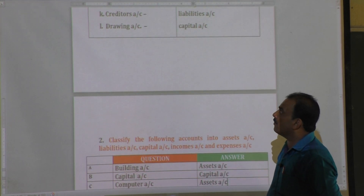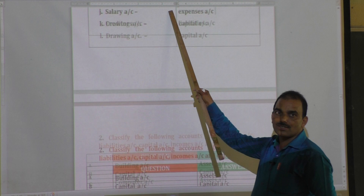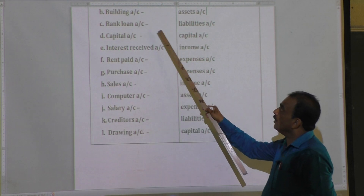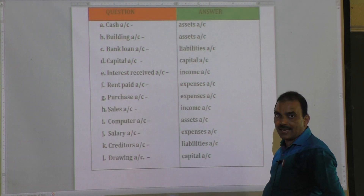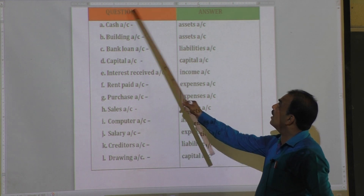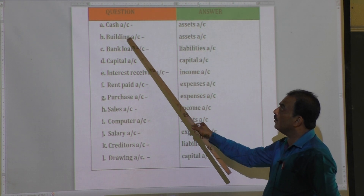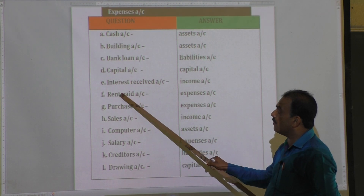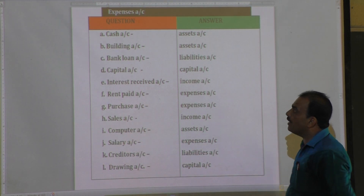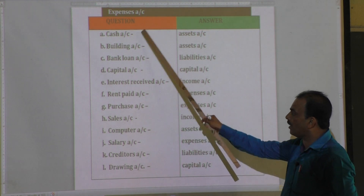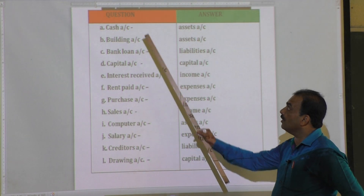You are required to identify which type of account each is. For example: cash account — asset account, because cash is an asset. Building — asset account. Bank loan — liability account, because as far as bank loan is concerned, business owes money to an outsider. Capital account — capital account, the third type (amount due to the owner). Interest received — income account. Rent paid — expense account.